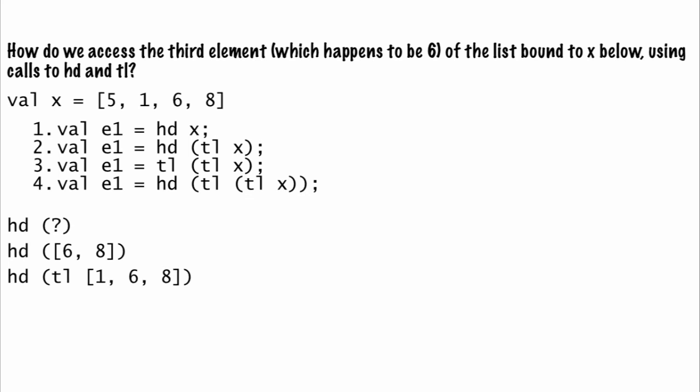Finally, to get the list 1, 6, and 8, we know we need to call tail on another list, which is our original list. Put that all together, and you get the head of the tail of the tail of x.